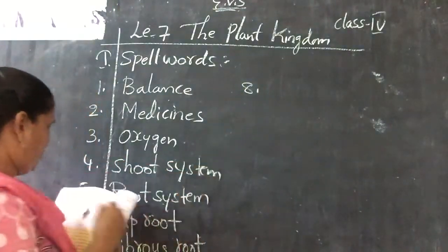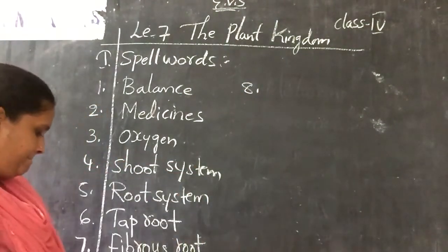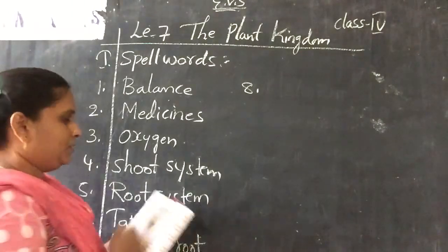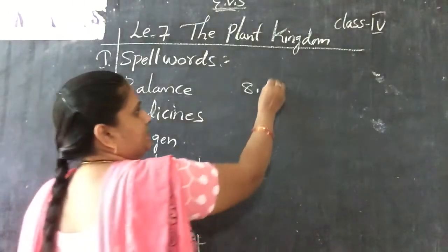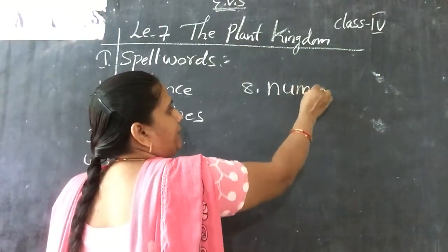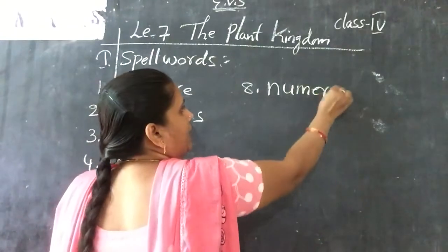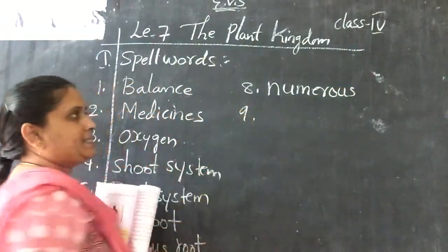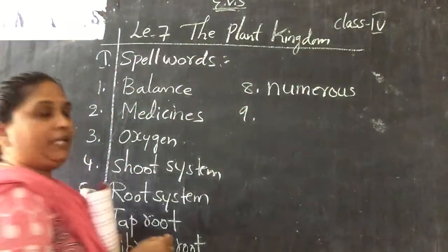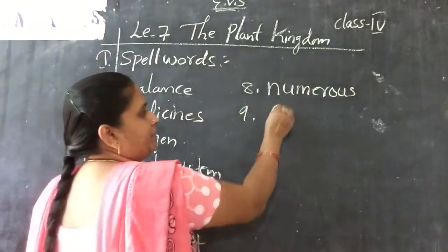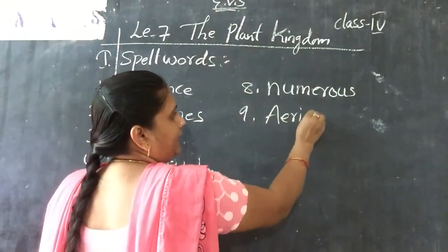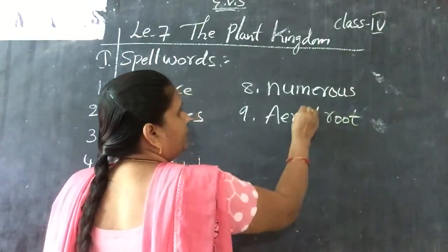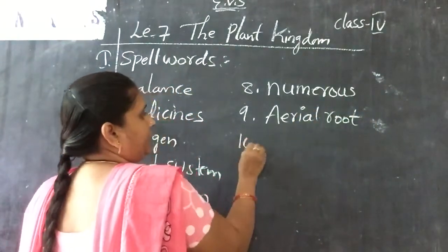Eighth one: numerous — N-U-M-E-R-O-U-S — numerous. Ninth one: aerial root — A-E-R-I-A-N, aerial; R-O-O-T, root — aerial root.